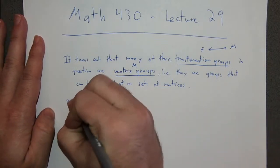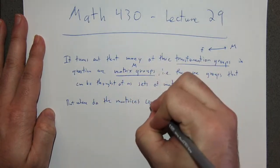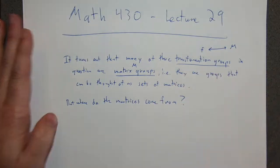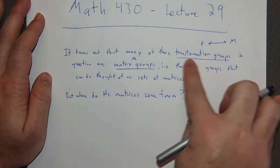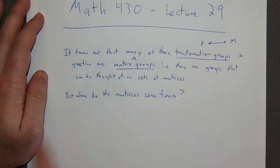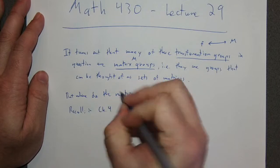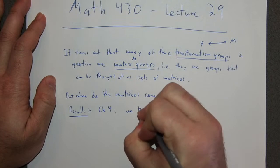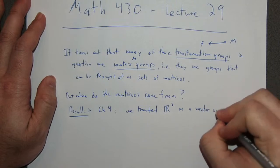Where do the matrices come from? The chapter 3 and chapter 4 approach, especially chapter 4, is going to show how the matrix groups are related to our original description of these groups. In chapter 4 material, we treated R² as a vector space.